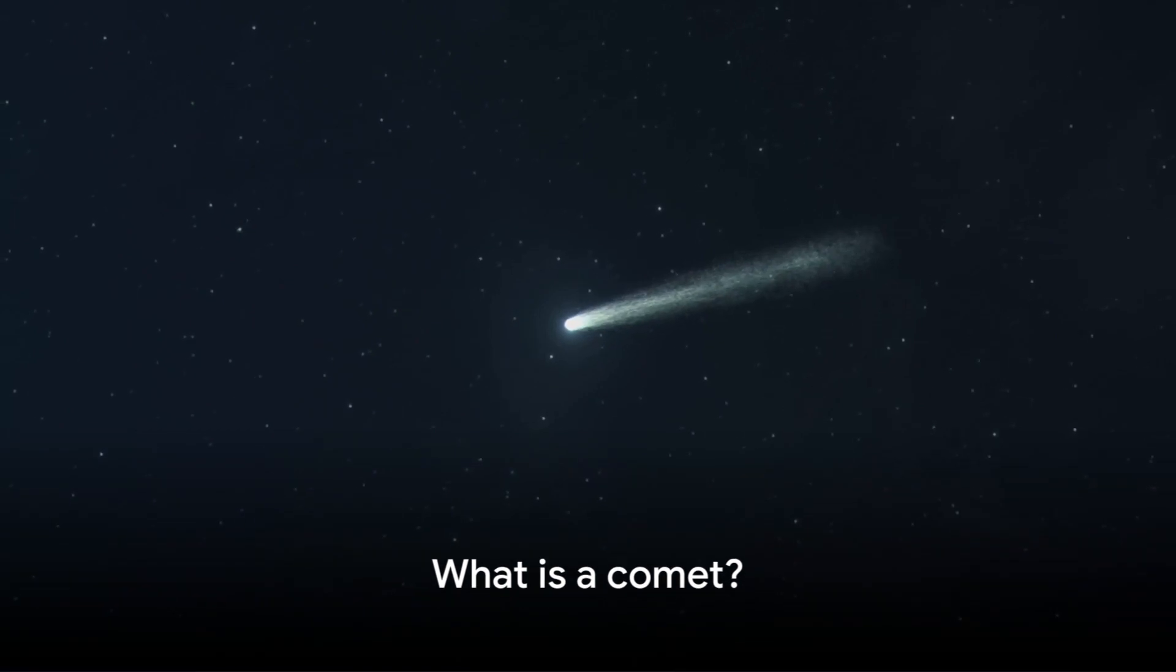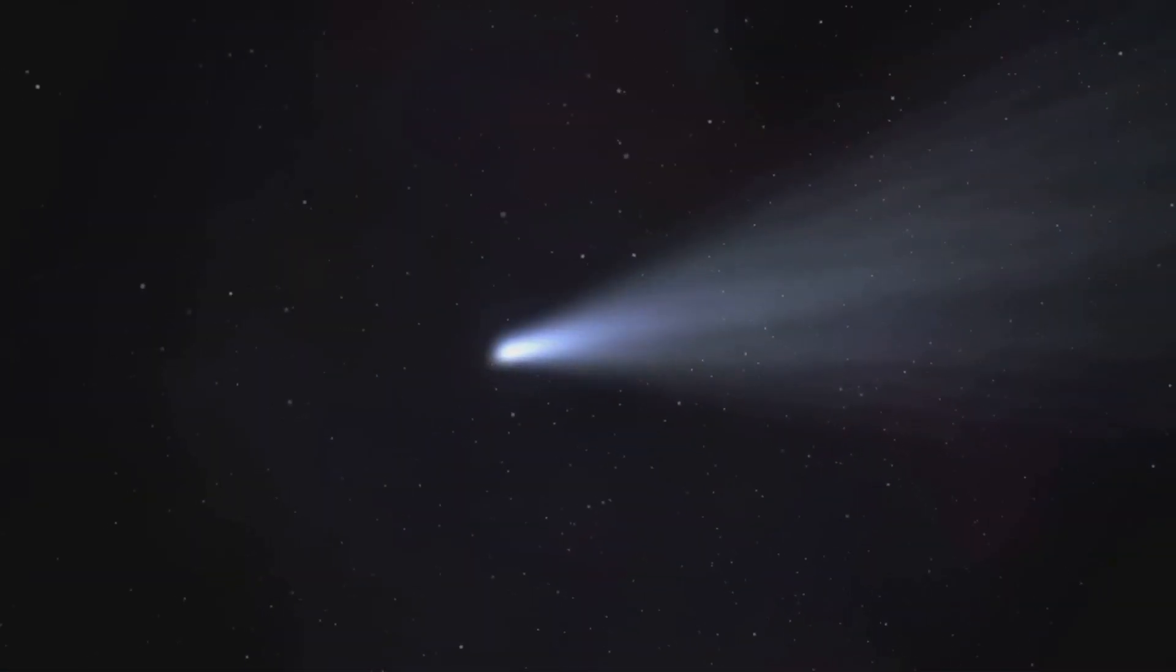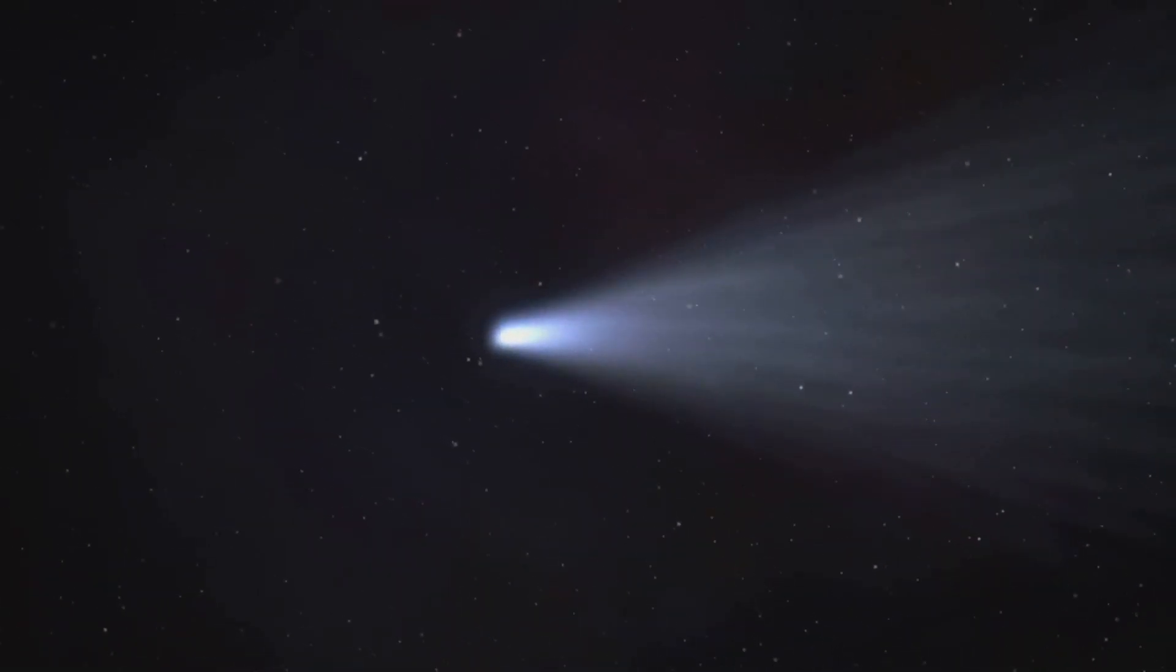A comet is a small celestial body made up of ice, dust, and rocky particles. When a comet gets close to the sun, the heat causes the ice to vaporize, creating a glowing coma and sometimes a tail.